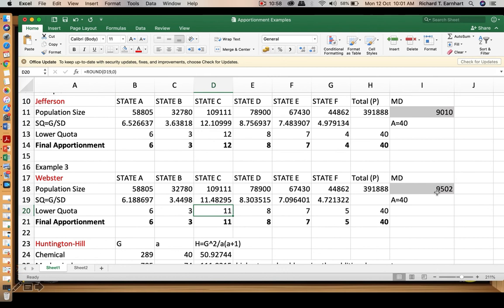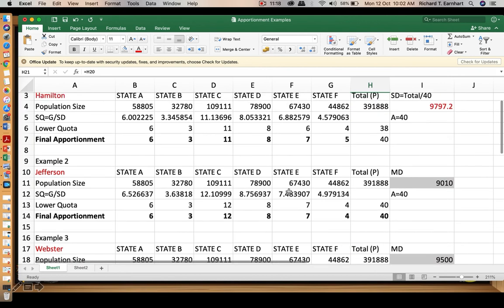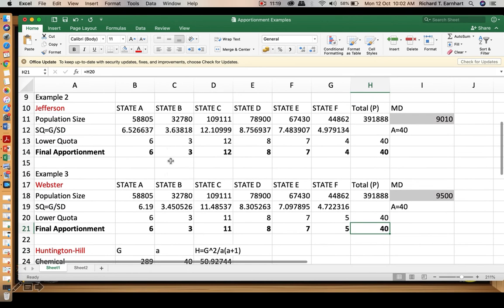If you try 9,000 here, the sum is 44. So you may adjust to 9,500, and then the total is 40. This is the final apportionment using the Webster, similar to the one we obtained from Hamilton method.